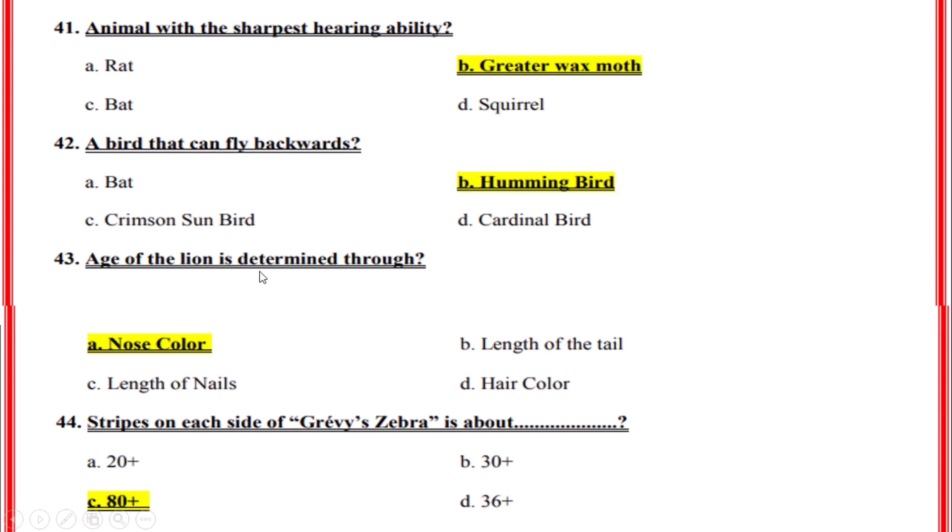Age of the lion is determined through? Correct option: A, Nose color. Stripes on each side of Grevy's zebra is about? Correct option: C, 80 plus.